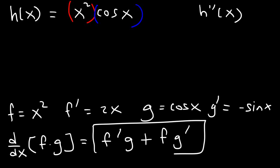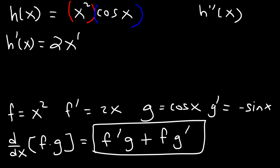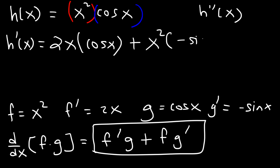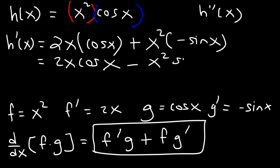So using this formula, h prime of x is going to equal the derivative of the first part, which is 2x, times the second part, that's cosine, plus the first part, which is x squared, times the derivative of the second part, which is negative sine x. It's best to leave it the way it is. So we have 2x cosine x minus x squared sine x.